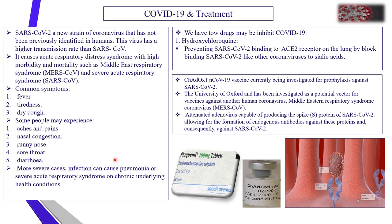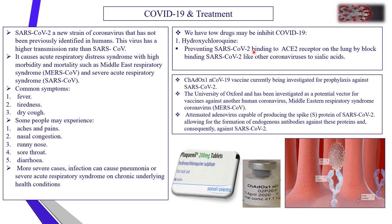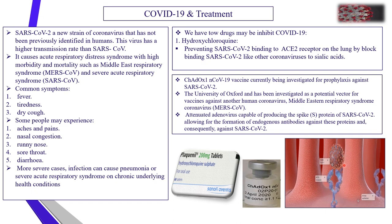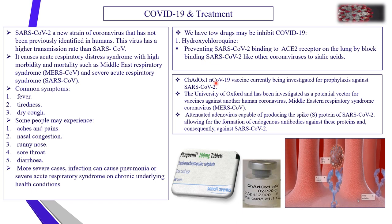In more severe cases, infection causes pneumonia. One treatment option is hydroxychloroquine, which prevents SARS-CoV-2 from binding to the ACE2 receptor on the lung by blocking binding of SARS-CoV-2 to sialic acid. We can see in the figure the ACE2 receptor and SARS-CoV-2 binding to the receptor and entering the lung cell. There are also new vaccines that may provide inhibition and prophylaxis against SARS-CoV-2.